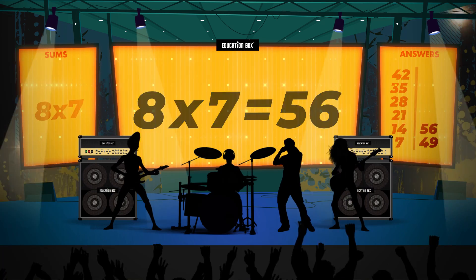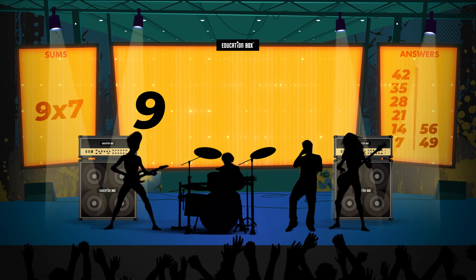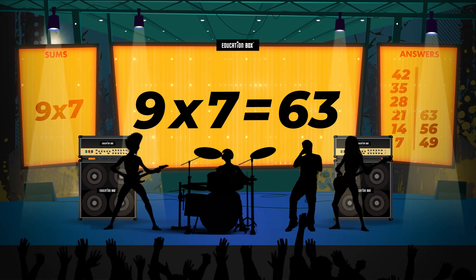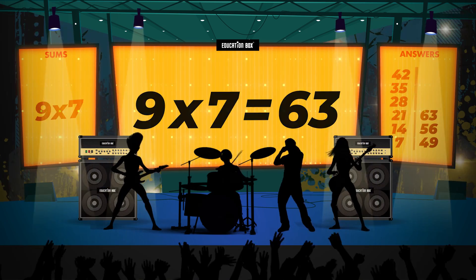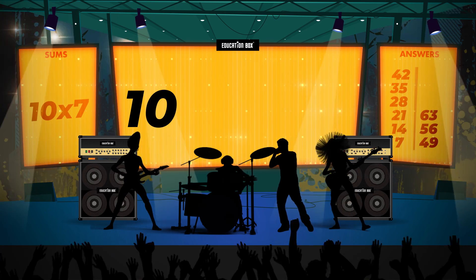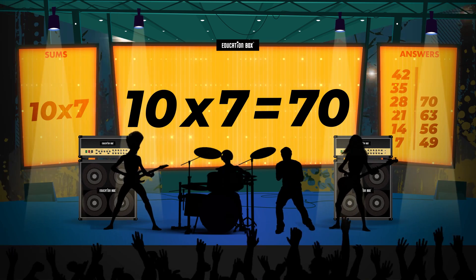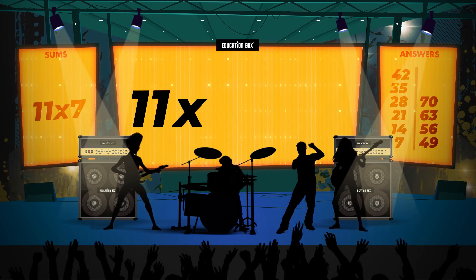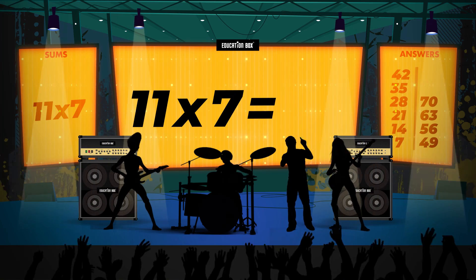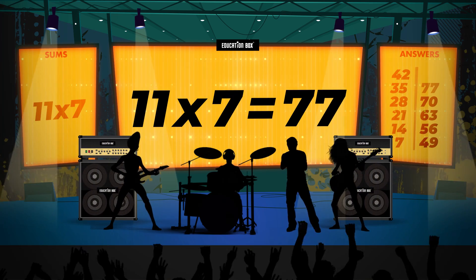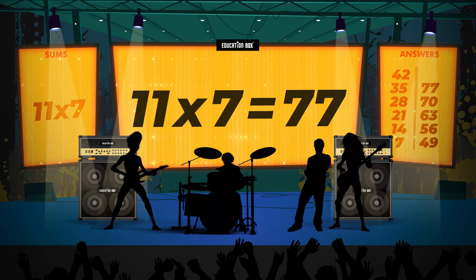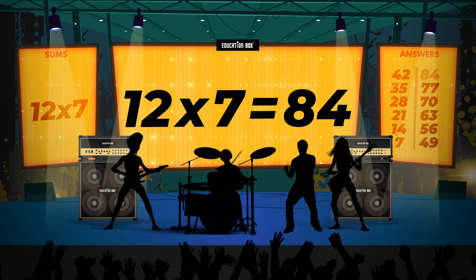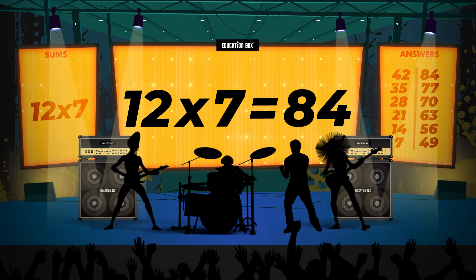Nine times seven is sixty-three. Ten times seven is seventy. Eleven times seven is seventy-seven. Twelve times seven is eighty-four.